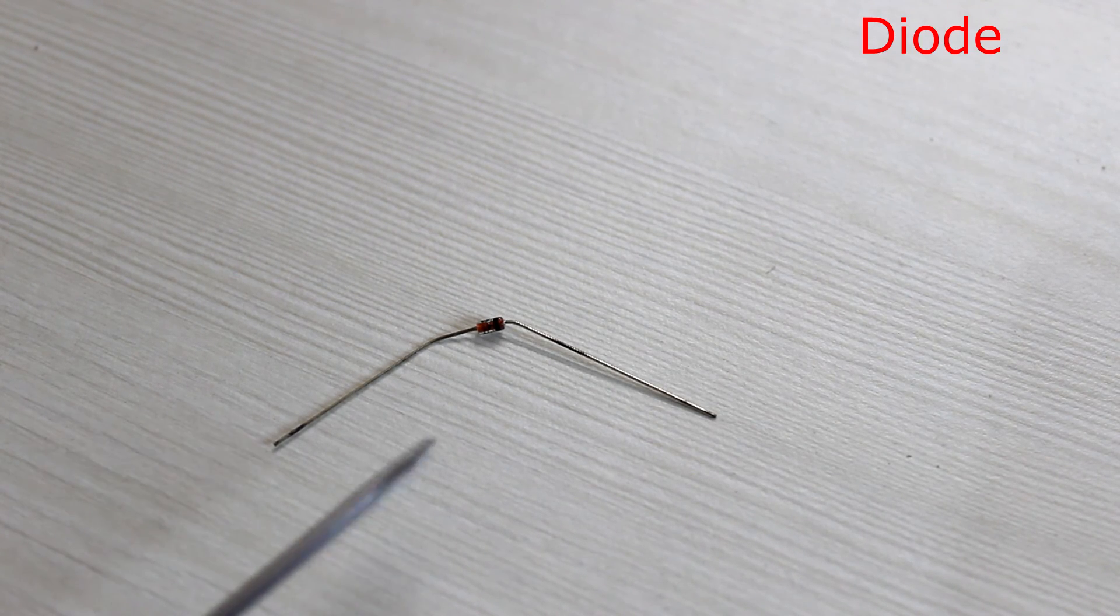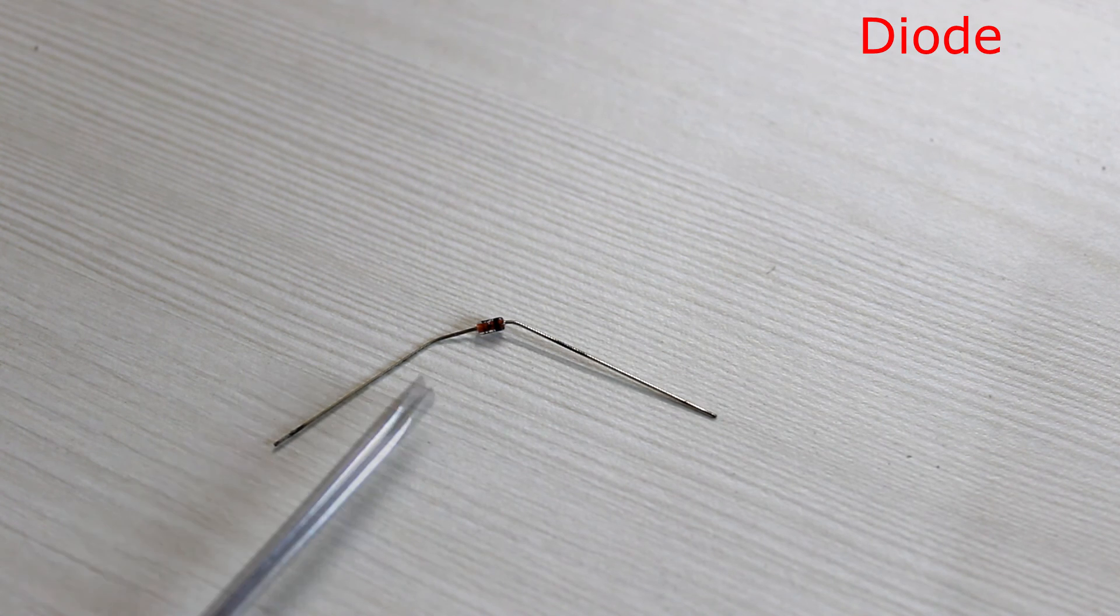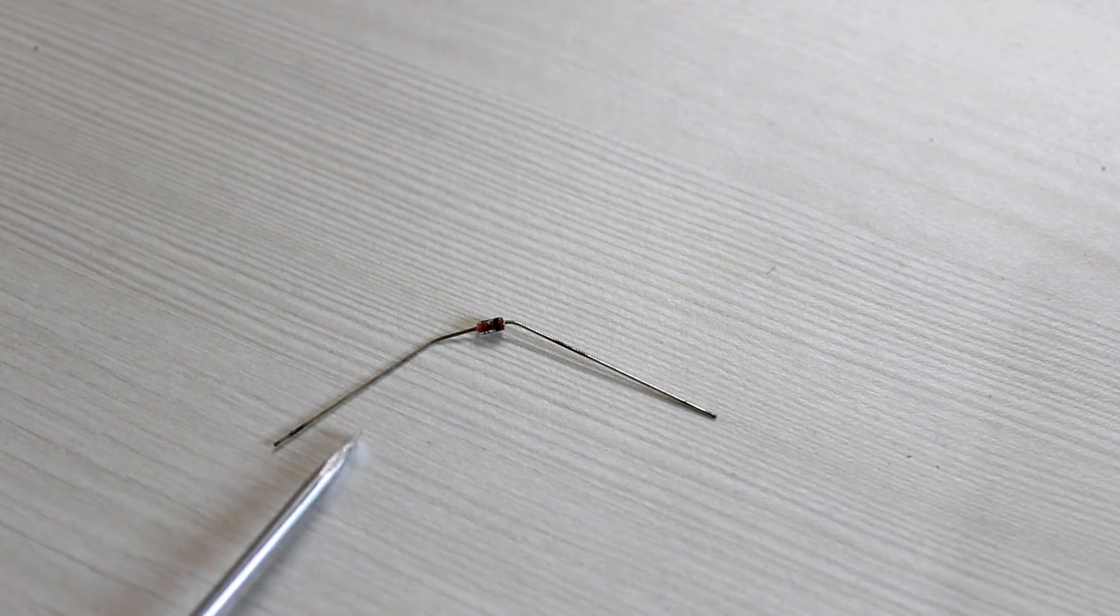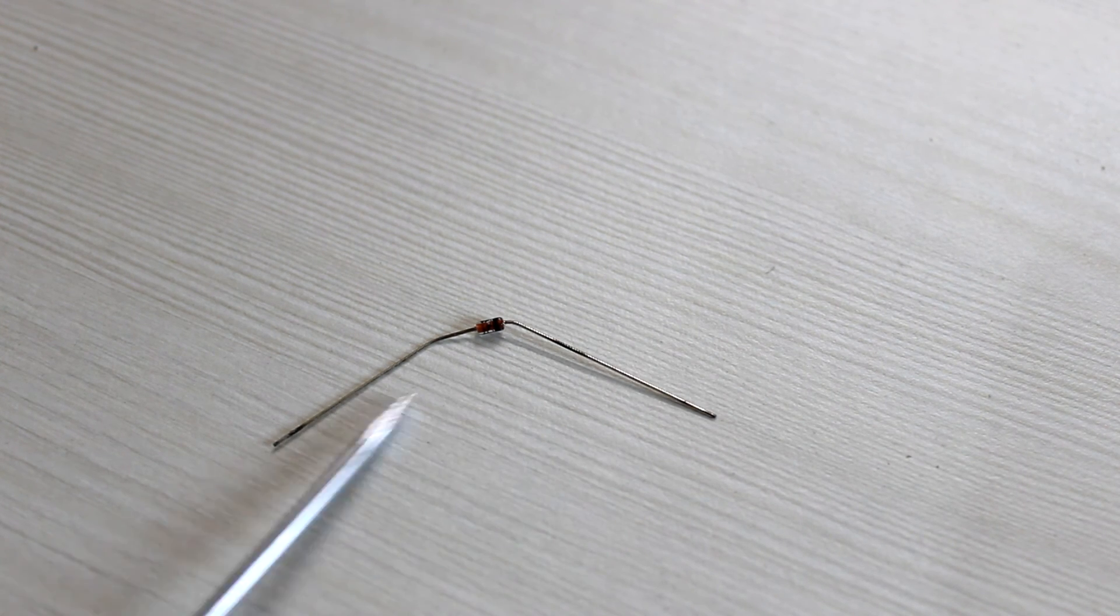This is a 1N4148 diode. The dark line corresponds to the cathode which must be connected to the negative. And the other is anode which is the positive. The current flows in this direction.